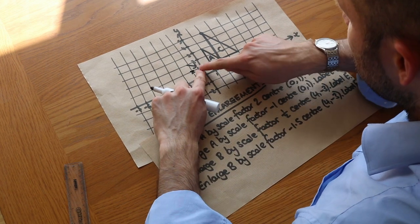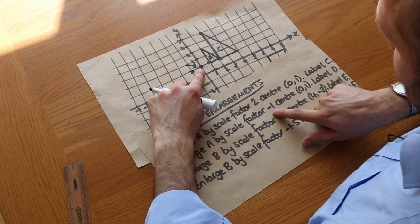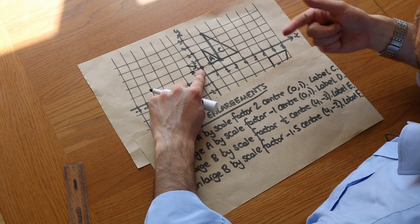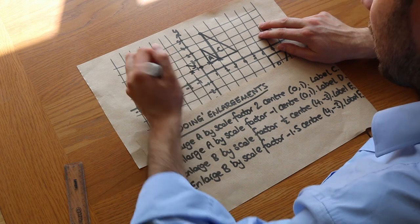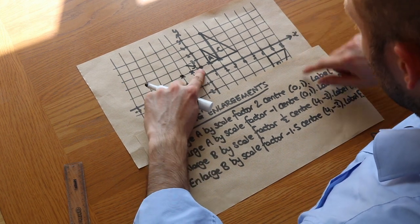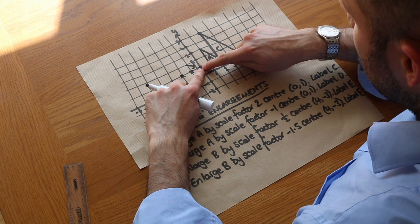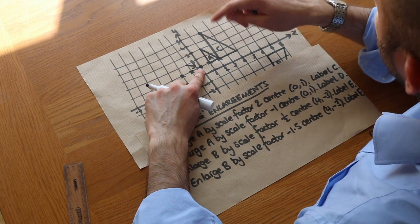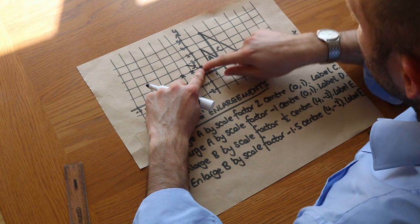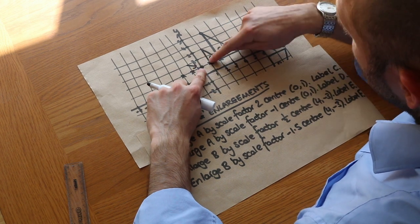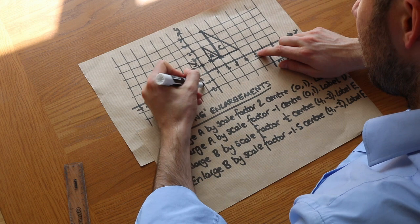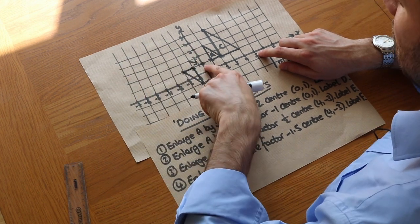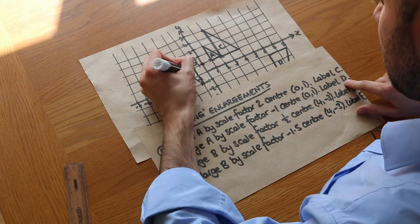What about the next points? It's two right — times that by minus one — that becomes two left, so it's now here. Then counting from the centre of enlargement (0,1) to the top point, it's one right and two up. Timesing by minus one flips it: the one right becomes one left and the two up becomes two down. We can see this result is actually a rotation by 180 degrees about that centre. We label this one D.